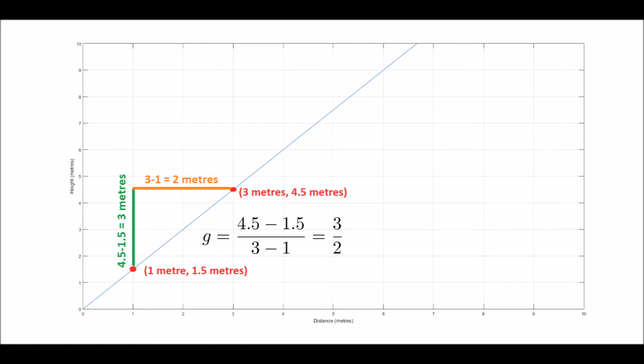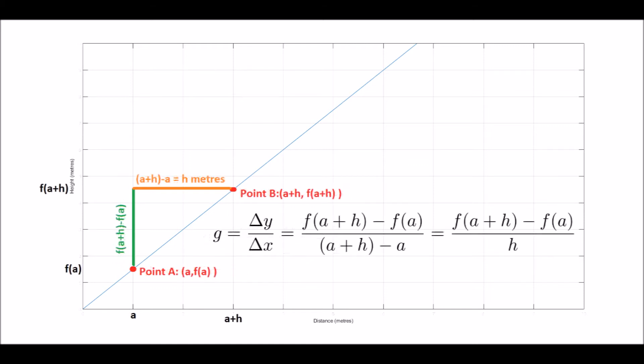Now let's try this again without any particular values, any particular numbers. Well we know what we want is the change in distance, which is the distance at point B minus the distance at point A. Let's say the distance at point B is the distance at point A plus a small change in distance, which we'll denote as h.